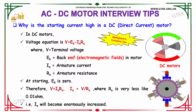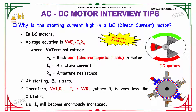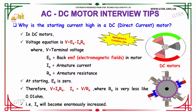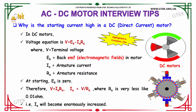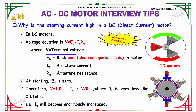Why is the starting current high in a DC motor? In terms of DC motor, the voltage equation is V = Eb − Ia × Ra. Here V is the terminal voltage, Eb is the back EMF, Ia is the armature current, and Ra is the armature resistance.